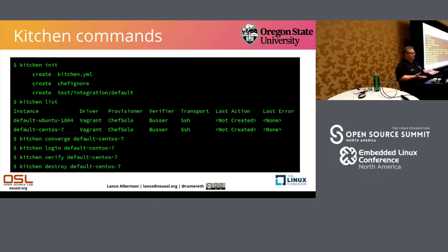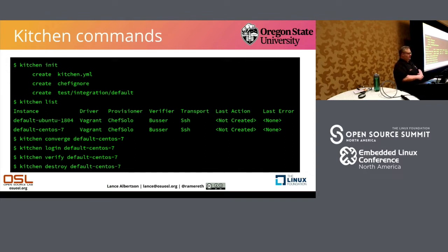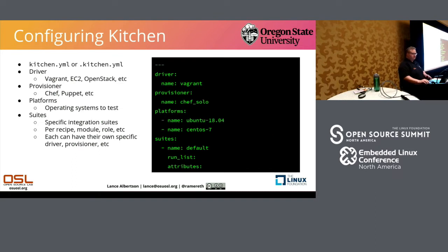Here are some common commands. In a new repository you can run `kitchen init`. If you want to see the list of suites, run `kitchen list` — here you can see there's one called 'default', the main suite, with two platforms. It's using the Vagrant driver and by default Chef Solo. You can run `converge`, which spins up the VM and runs the configuration management tool. If you want to log in and poke around during development, you can do that. There's also the `verify` command to run the actual test suite, and `destroy` to tear it down. If you want to do all steps — excluding login — you can just run `test`, which does converge, verify, and destroy automatically.